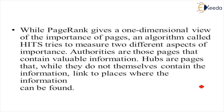While PageRank gives a one-dimensional view of the importance of pages, HITS tries to measure two different aspects of importance. Authorities are pages that contain valuable information; hubs are pages that link to places where information can be found. We perform approximately 20 to 25 iterations until both the authority matrix and hub matrix converge to constant values, similar to what we did in PageRank. Thank you.